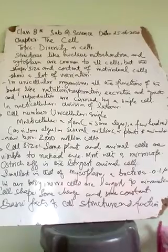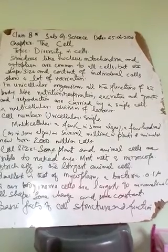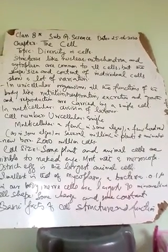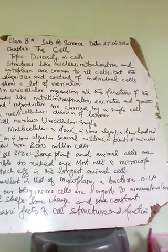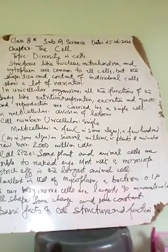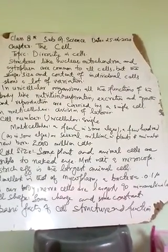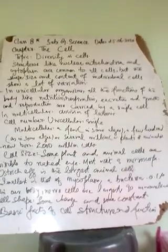Regarding cell number: unicellular organisms are formed by a single cell, while multicellular organisms are made of many cells, which may be of many types. The number of cells may vary a lot — some algae have just a few hundred cells, but in plants and animals there may be many millions, up to billions and trillions. A newborn baby has at least two thousand million cells — that is 2 followed by ten zeros.